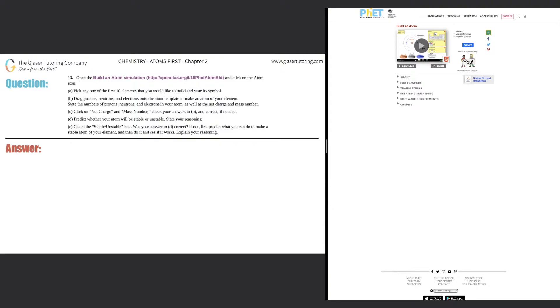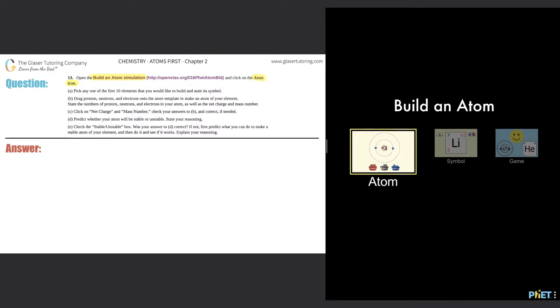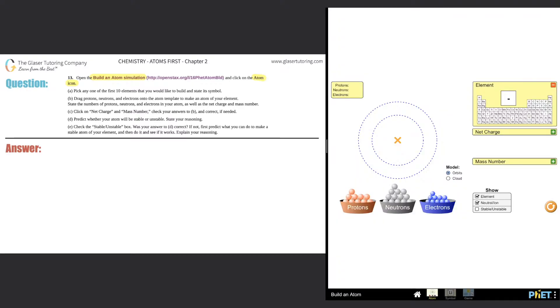Number 13: Open the Build an Atom simulation, there's the link right here, and click on the atom icon. There's a link in the description if you don't have the simulation open, so you can copy and paste it. You'll get the screen on the right-hand side. Just click the play button, so I'm going to do that right now. Here you go, it brings you to this and they say click on the atom icon—that's the first one here—so I'm going to click that and now we're in.